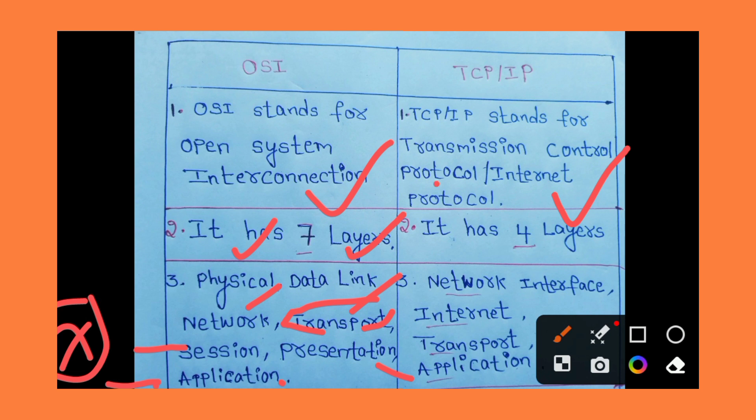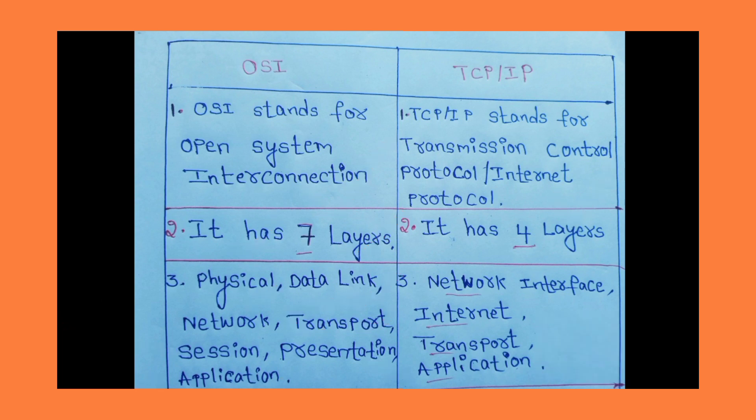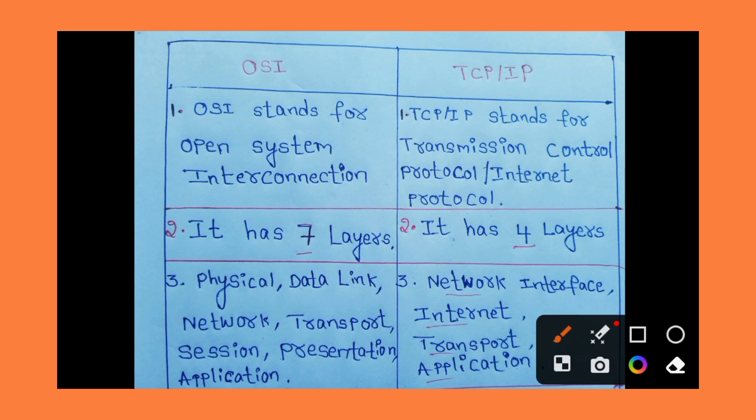In TCP/IP, there are only four layers. The first layer is the Network Interface Layer, the second layer is the Internet Layer, and the third layer is the Transport Layer.